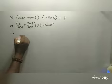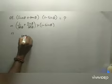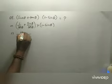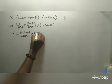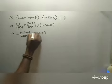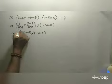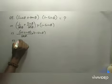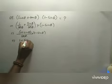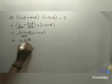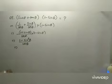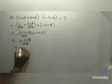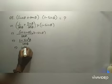Here, cos θ is the LCM, giving (1 + sin θ)(1 - sin θ) over cos θ. That is (1 - sin²θ)/cos θ, and since 1 - sin²θ = cos²θ, this becomes cos²θ/cos θ.